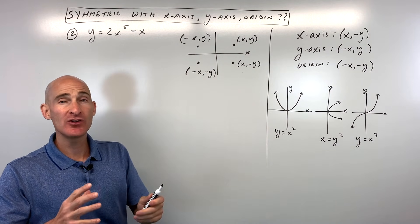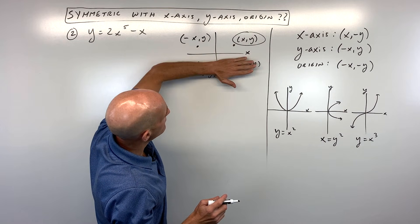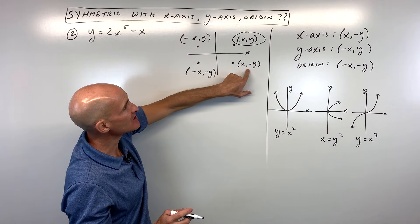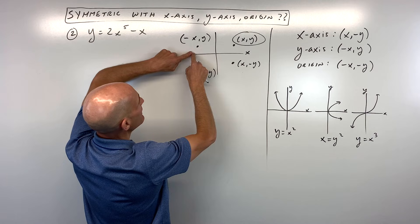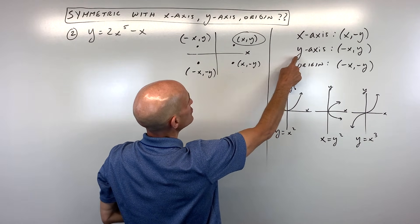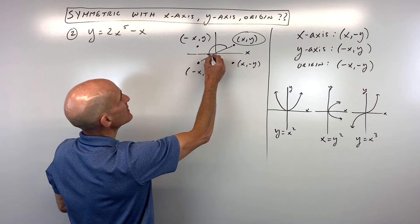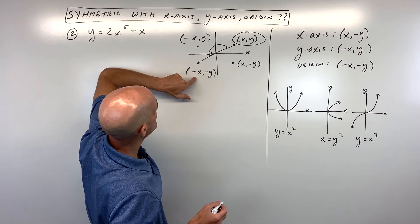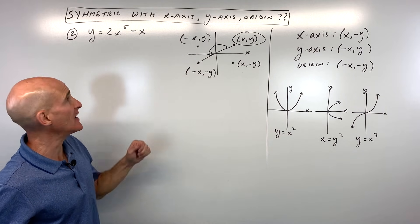Sometimes students forget which test to use. Another way to remember is to start with your basic point (x, y). If you reflect it over the x-axis, you're still going right x but now going down — see the negative y. If you reflect over the y-axis, instead of going right x you're going left x, but the same y-value. For the origin, rotating 180 degrees, both the x and y values are the opposite sign. This picture can help you remember the tests.